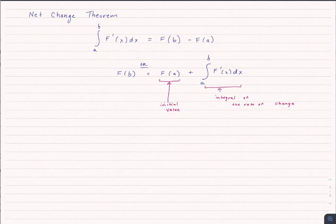If we take this equation and add f of a to both sides and look at this in terms of f of b, we can also think of this as f of b equaling some initial value f of a, plus the integral of the rate of change. That is the integral of f prime of x dx from a to b. Remember the first derivative is the rate of change. So it's just a different way of thinking about it, but it's the exact same thing.